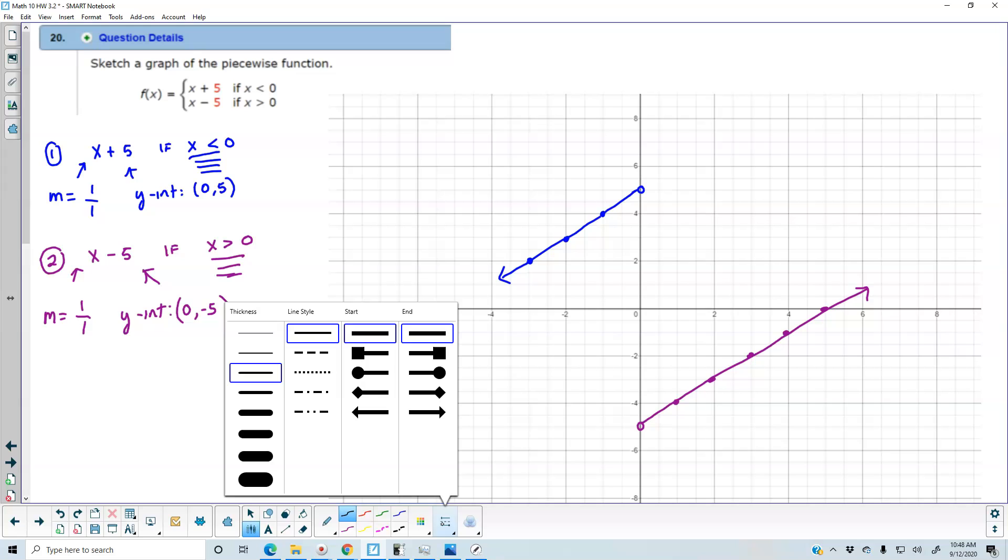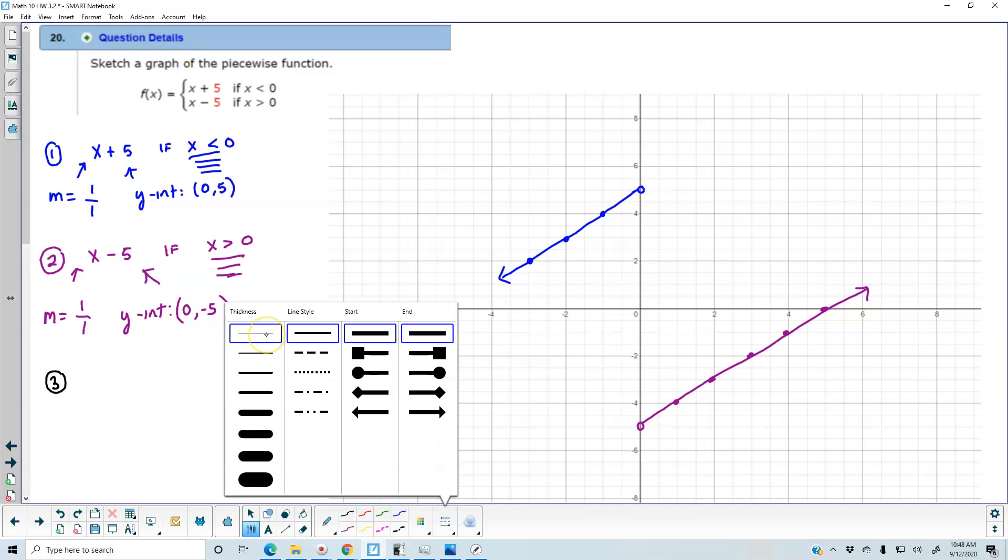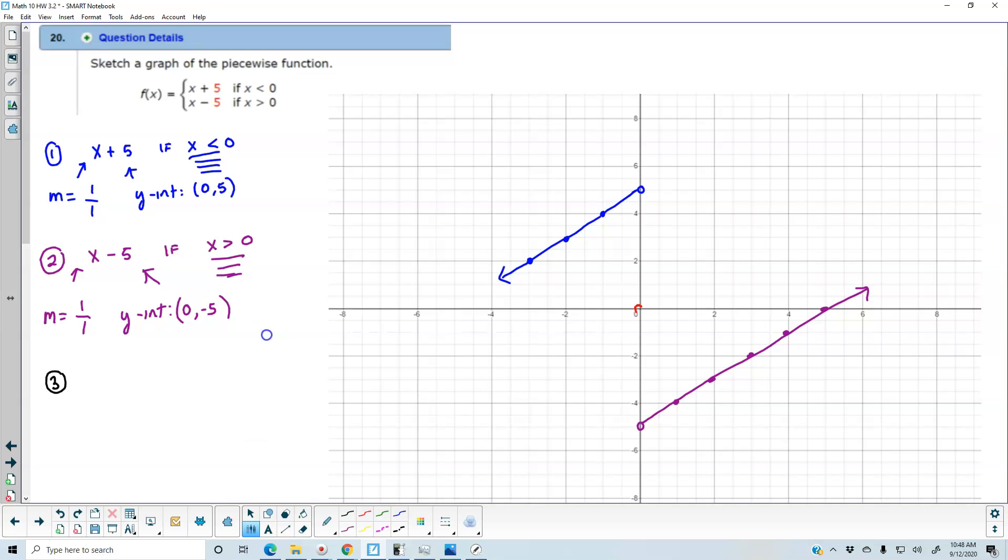So now in step three, they want us to determine what is the domain and the range of this function. So the domain of this function, we have an open circle at 0. It's going towards this direction, towards negative infinity, and it's also going in this direction towards positive infinity. Now, since we can't include the 0, we're going to have parentheses here and a parentheses there. So the domain of this function starts at negative infinity and goes to 0 with a parenthesis, and then union starting at 0 and then going towards infinity.